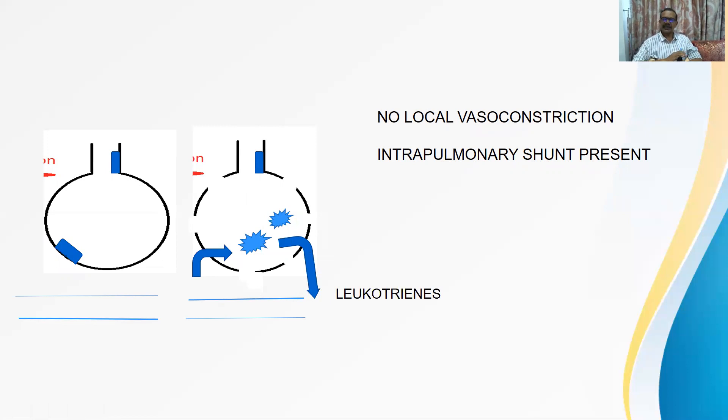Because what is happening is blood is coming to the useless alveolus. Now this is called intrapulmonary shunt. Shunt means this particular blood which actually should be oxygenated, it is not oxygenated. It is coming directly to heart again. Now this particular intrapulmonary shunt is the key feature in majority of this P-type of COVID.